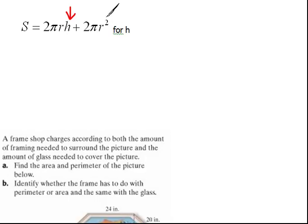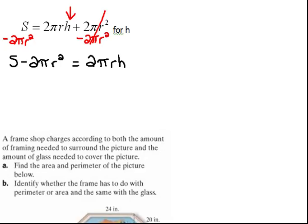The opposite of adding 2 pi R squared would be to subtract 2 pi R squared. Now, on the left hand side we'd have S minus 2 pi R squared. We can't combine those because we don't know what those variables are. But we can write it as the subtraction. So that's S minus 2 pi R squared equals 2 pi R H.